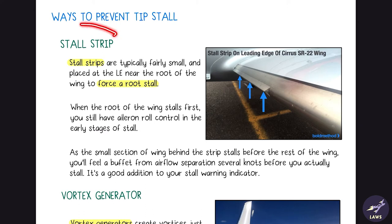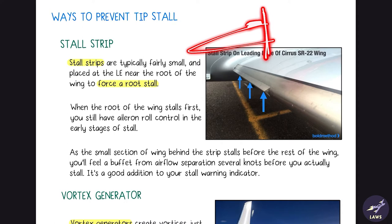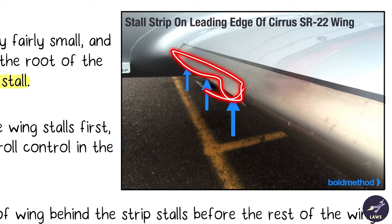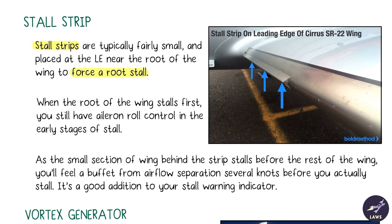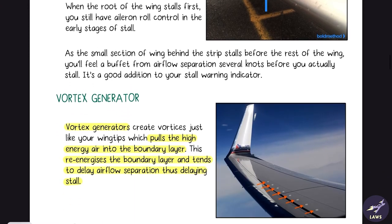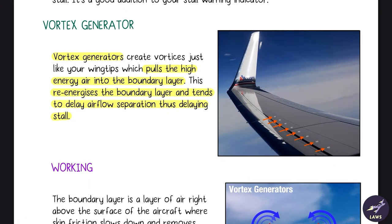The first method is the stall strip — a strip near the wing root that causes airflow to stall near the root first. It also produces a small buffet well before the actual stall, acting as a stall warning. As seen on some aircraft, the stall strip forces a root stall and gives an aerodynamic buffet from airflow separation several knots before the actual stall.